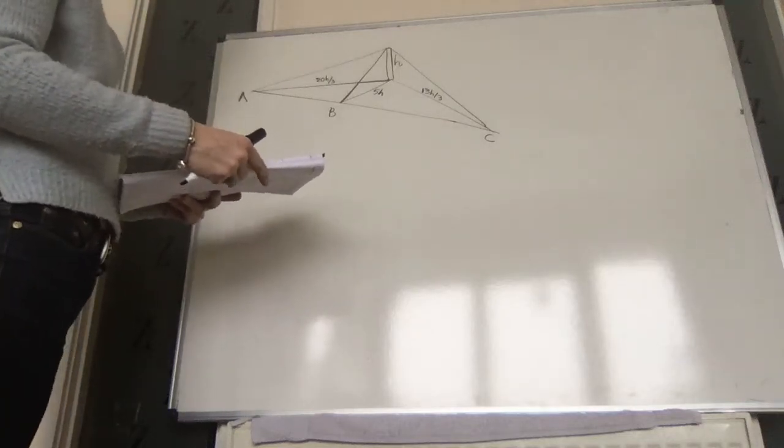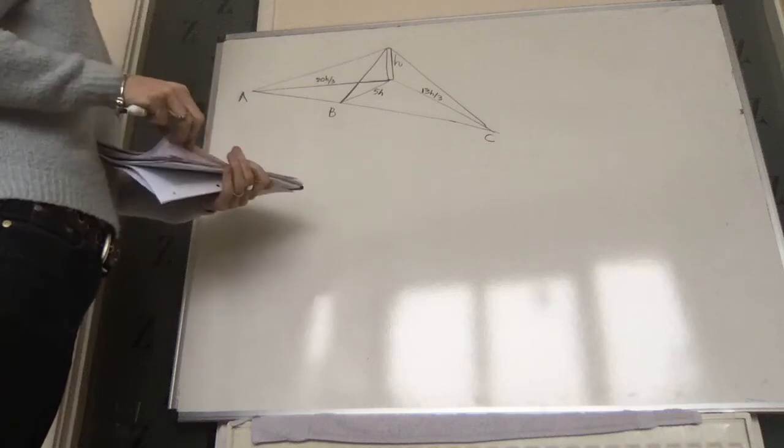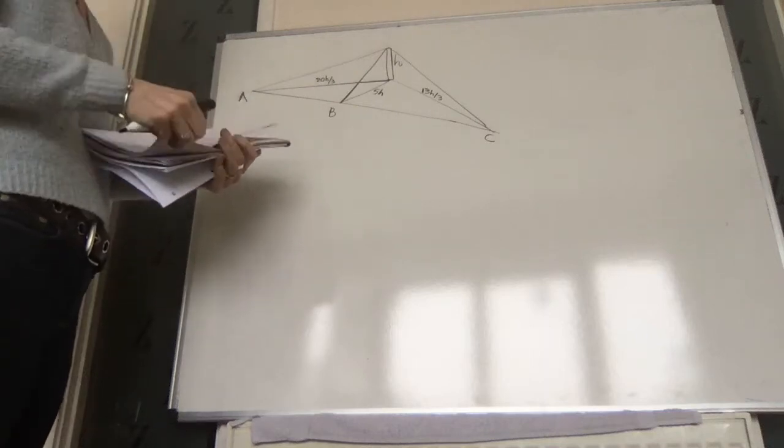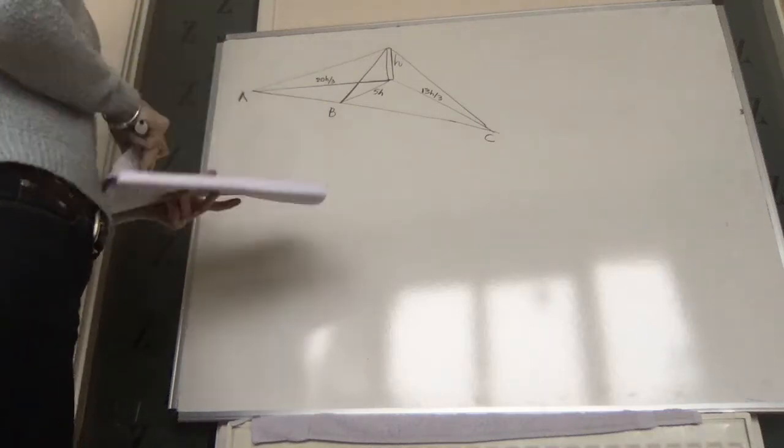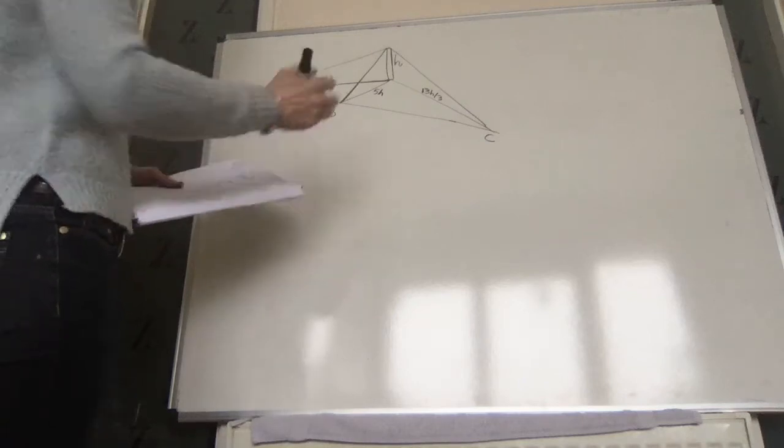Continuing on with question 9, part a, the next bit is asking you to show that the cosine of angle DBC...